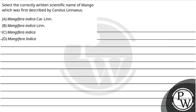Hello children, let's read the question. The question here is: select the correctly written scientific name of mango, which was first described by Carolus Linnaeus. So these are our options: option A is Mangifera indica Carolus Linnaeus, option B is Mangifera indica L. Linnaeus, option C is Mangifera indica, and option D is Mangifera indica.